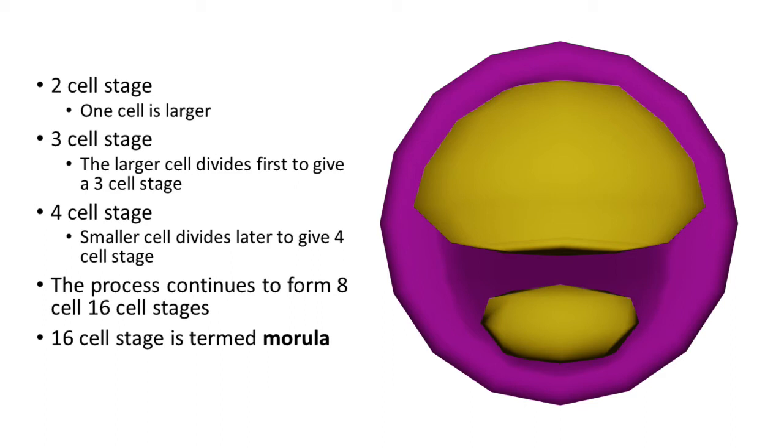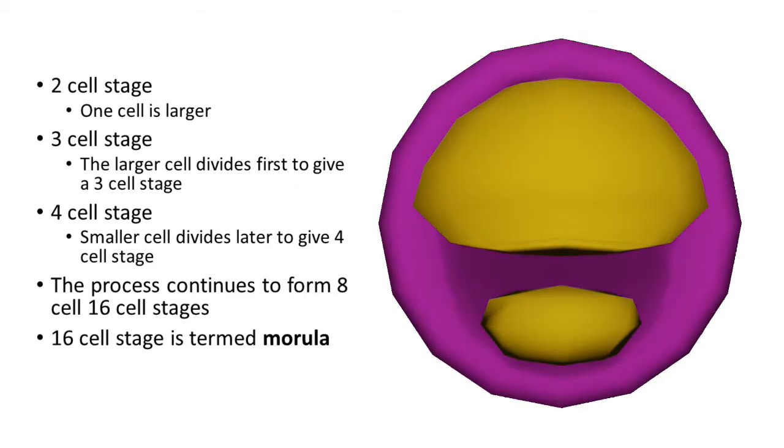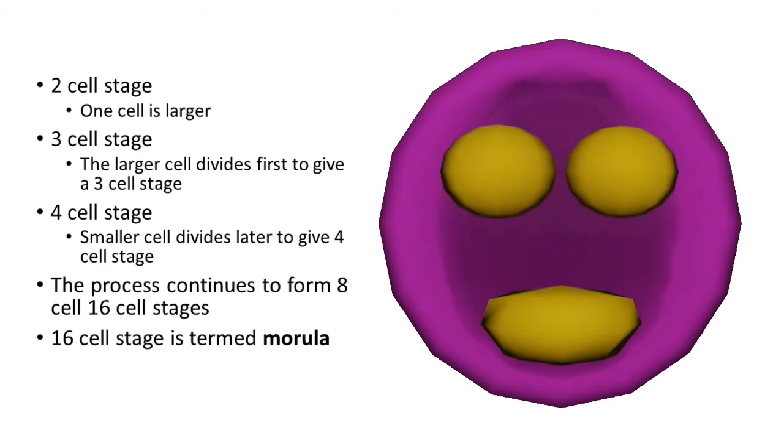Now the usual layman expectation is both cells start dividing simultaneously giving rise to four cells, but that is not the case. The larger cell divides first, giving rise to a three-cell stage. Then the smaller cell follows, thereby making it four cells. This process continues to eight cells and to sixteen cells.